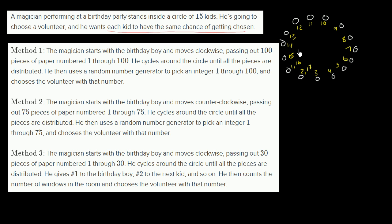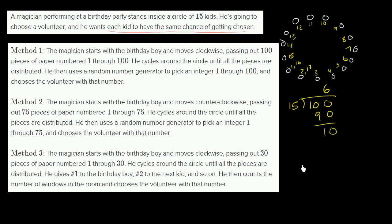Think about whether every child is going to get the same number of pieces of paper. If we keep cycling around all the way to 100, does each child get the same number? In order for that to happen, 100 has to be divisible by 15. And 100 is not divisible by 15 — 15 goes into 100 six times (6 × 15 = 90), with a remainder of 10. So all 15 kids get 6 pieces of paper, and then another 10 of the 15 get a 7th piece.